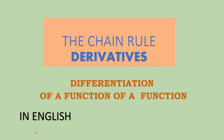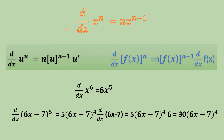Today, we shall discuss the chain rule of derivatives. It is also called the differentiation of a function of a function. We begin with the power rule. It states that the derivative of x raised to the power n will be n times x to the power n minus 1. This power comes in the beginning and the original power of x is reduced by 1.